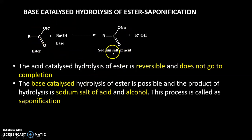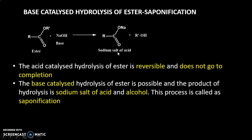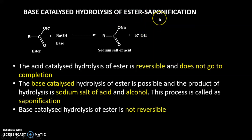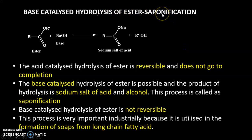Now I will explain why this process is called saponification. Soaps are nothing but the sodium salt of higher fatty acids. If you take a higher ester — an ester generated from a higher fatty acid — and hydrolyze it, you get the sodium salt of the higher fatty acid. Since the product is the sodium salt of a higher fatty acid, the overall process is called saponification. It is irreversible because it is base-catalyzed, and it is industrially very important because soaps are formed in this reaction.